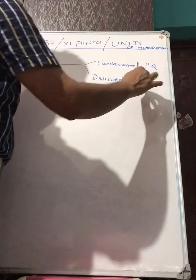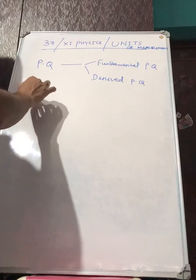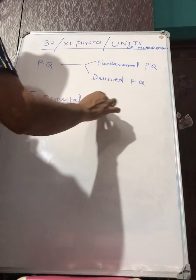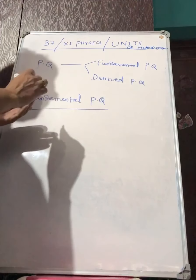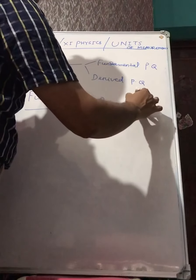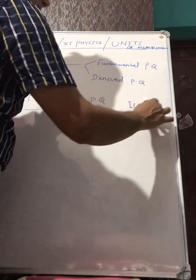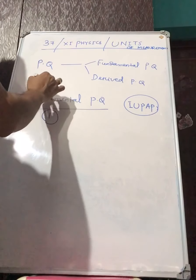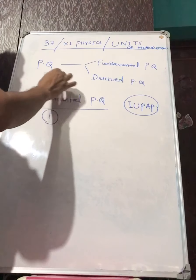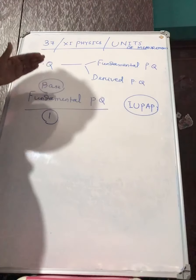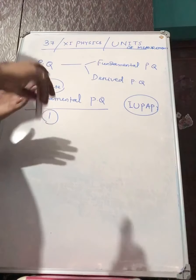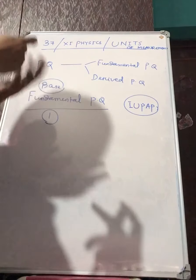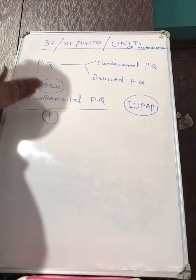At the international level, there are seven fundamental physical quantities, defined by the international system. There is an organized body, IUPAC, that has developed these seven fundamental physical quantities. These are also called base quantities. It is believed that using these seven fundamental physical quantities, we can express any other physical quantity by multiplying or dividing with the fundamental physical quantities.